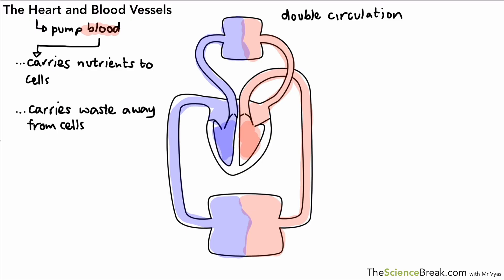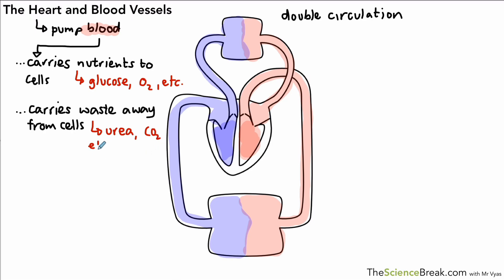What do we mean by nutrients? A couple of examples are glucose for respiration and oxygen, which is also for respiration, as well as other substances like amino acids from digestion. We also have waste being carried away — examples include urea, carbon dioxide, and lactic acid, which is produced during heavy exercise. The blood needs to be pumped constantly around the body, and this is achieved by the double circulation.